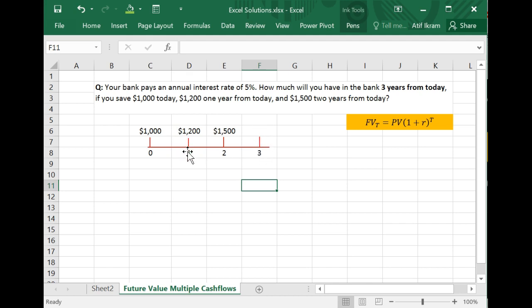But then you're going to deposit another $1,200 after one year which then will sit in the bank for one and then two years. And then finally this $1,500 is going to sit in the bank for one year because you're going to deposit it at the end of two years.